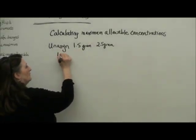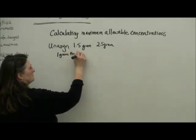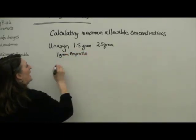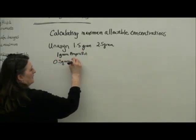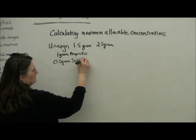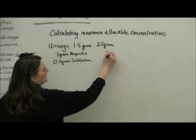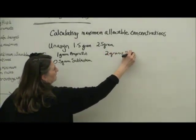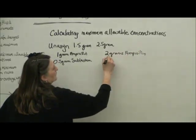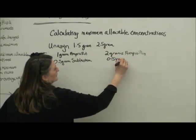This vial would have 2 grams of ampicillin and 0.5 grams of sulbactam.